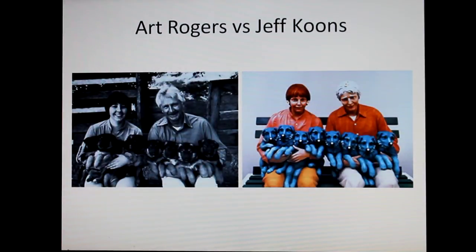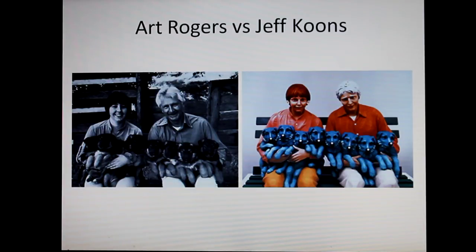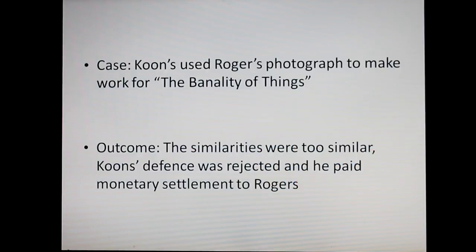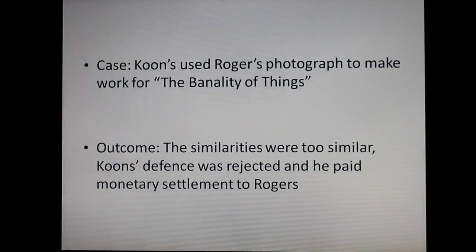This here is an example of a breach in copyright through appropriation. The photograph on the left was taken by Art Rogers in 1985 and sold for products such as greeting cards and other similar products. Then in 1988, Jeff Koons created the sculpture as seen in the photograph on the right, to be included in an exhibit on the banality of everyday items. Koons came across Rogers' photograph and used it to create a set of statues based on the image, of which he sold and made a sizeable profit.